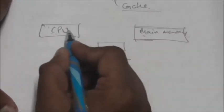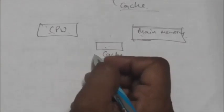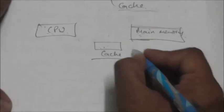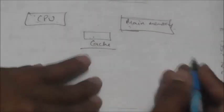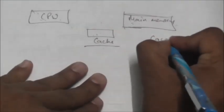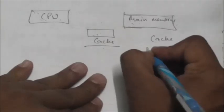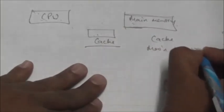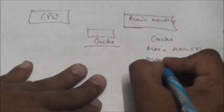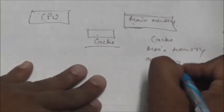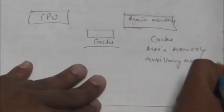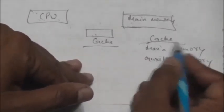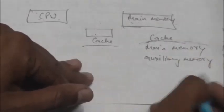Cache memory. So now we have three memories: cache, main memory, and auxiliary memory. Cache memory is the fastest among all these memories. Its size is smallest among all these three memories.